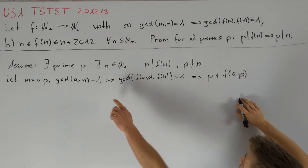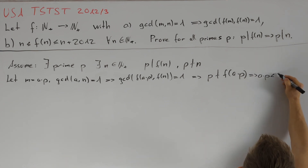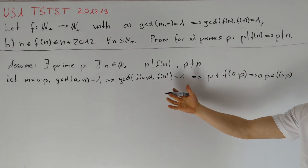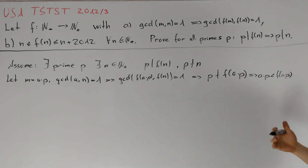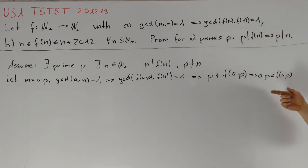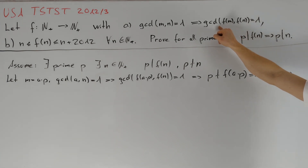Together with condition (b), we get that a·p < f(a·p). Our goal is to bring this whole argument to a contradiction. This inequality looks really promising because we have a lot of freedom in our variable a. We want to use condition (a) to bring this to a contradiction, and it would be great if f(a·p) has a lot of different prime divisors, because then it is easier to get a contradiction out of the right-hand side.